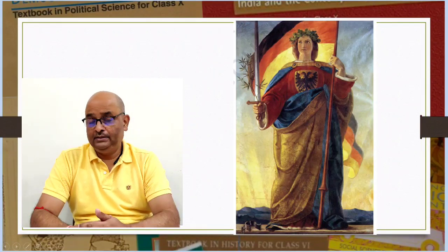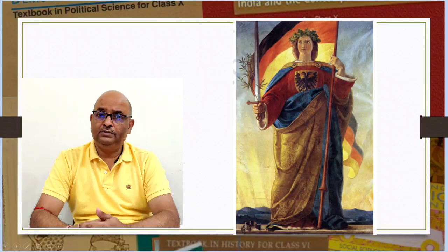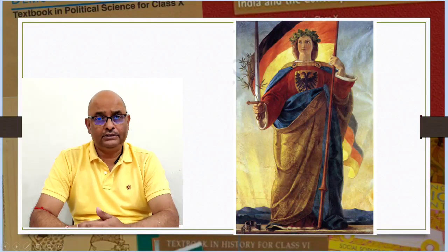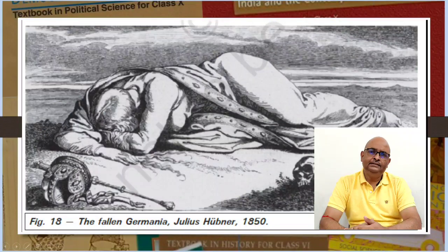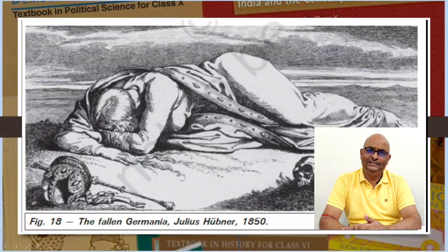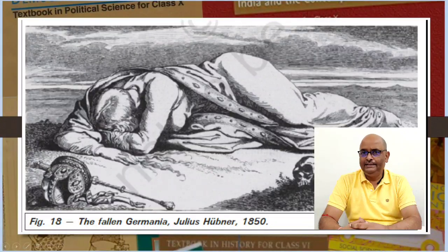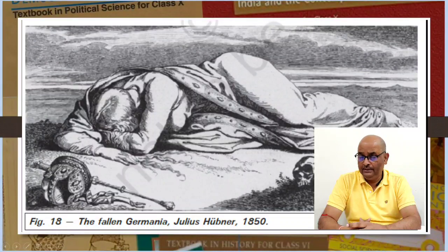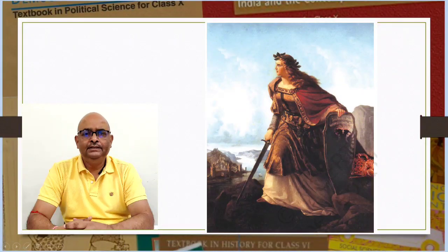Figure 17 is a painting of Germania, meant to be hung from the ceiling of the Church of St. Paul's where the Frankfurt Parliament was convened in March 1848; the painter is Philipp Veit. Figure 18, called 'Fallen Germania,' was made by Julius Hübner in 1850. The painter depicts a disgraced Germania — the German pride and strength laid down on the ground — conveying the deep sense of hurt and anguish Germans experienced at the failure of the Frankfurt Parliament in 1848.